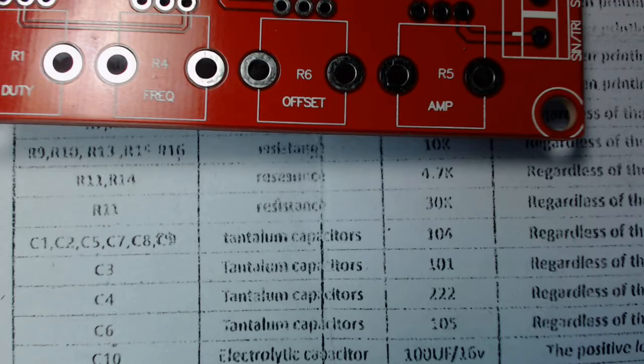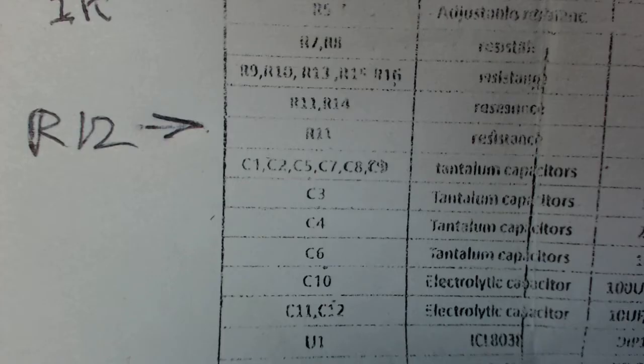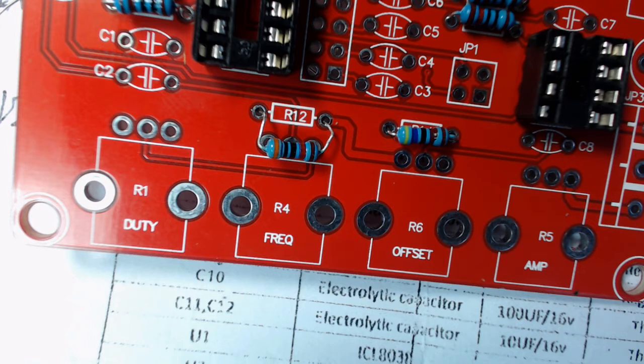Here's the next little gotcha in the kit. There is no R12 on the instruction sheet, but there is on the board. In this case, R12 is a 30K resistor. R11 and R14 are 4.7K resistors. Here's where R12 goes on the board when you put it together. 30K resistor again in this case.